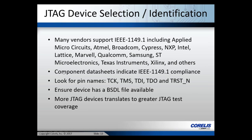When selecting JTAG devices, look at the component data sheet to confirm IEEE 1149.1 compliance. You can also look for pin names like TCK, TMS, TDO, and TDI as indicators of JTAG compatibility. Ensure the device has a BSDL (Boundary Scan Description Language) file available — this file defines all the architecture accessible by test tools. Without a BSDL file, tools can't generate test vectors effectively. For newer devices, there's sometimes a lag between device availability and when the BSDL file becomes available.